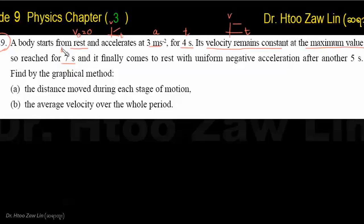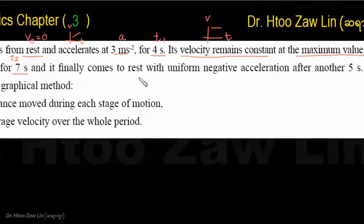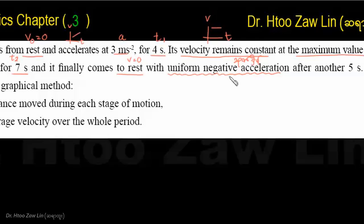Finally, the object comes to rest. The final velocity reaches zero with uniform negative acceleration — that is, the object decelerates uniformly until it stops.